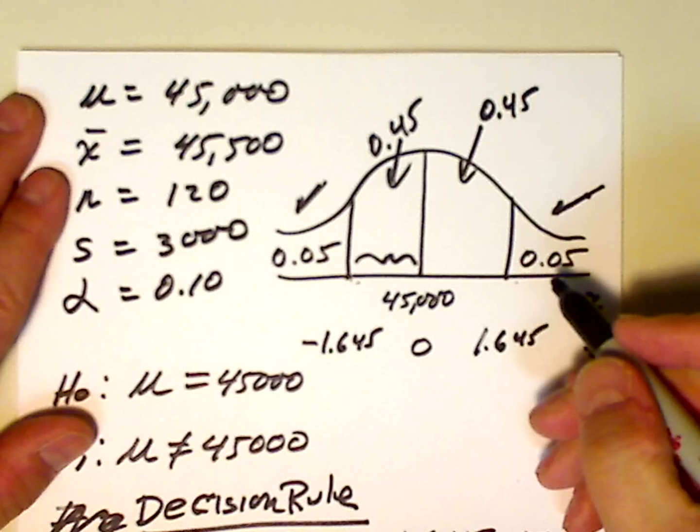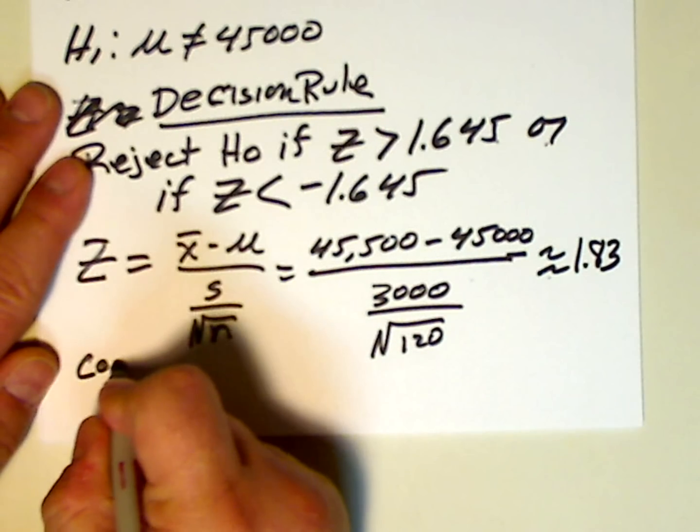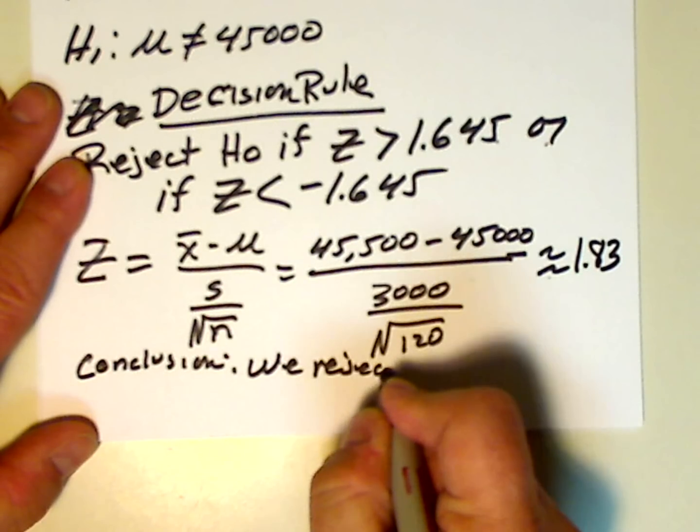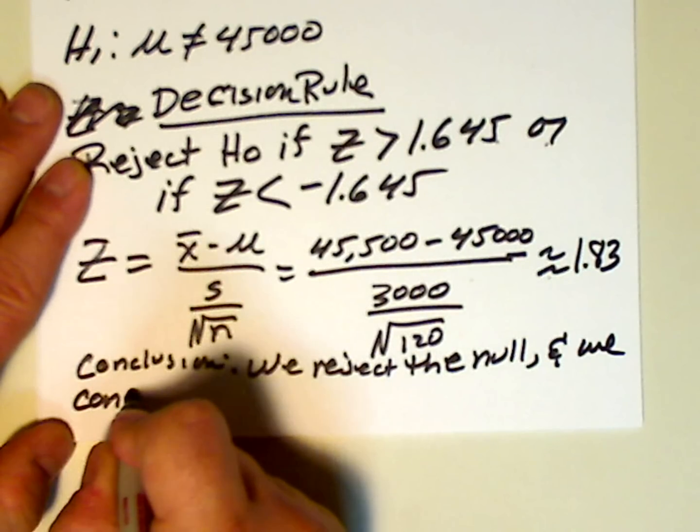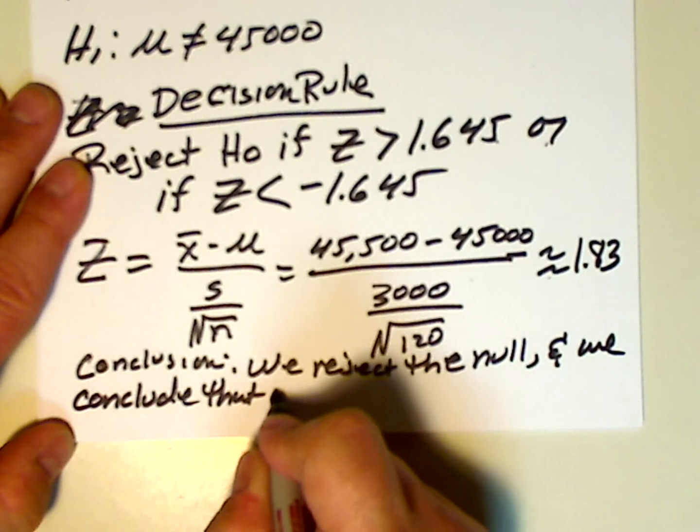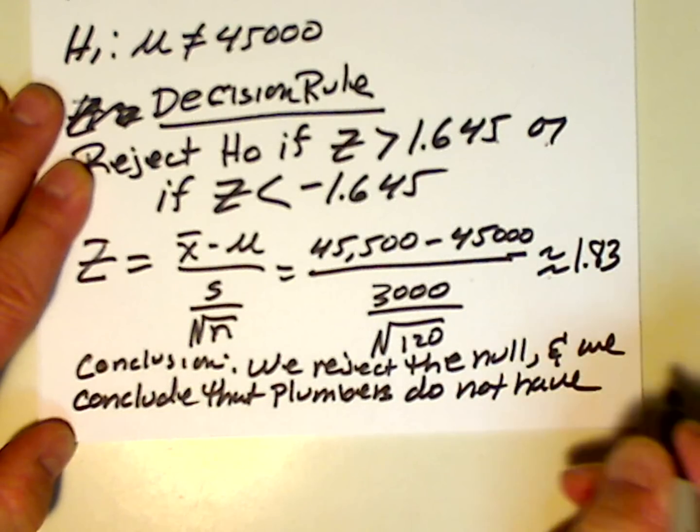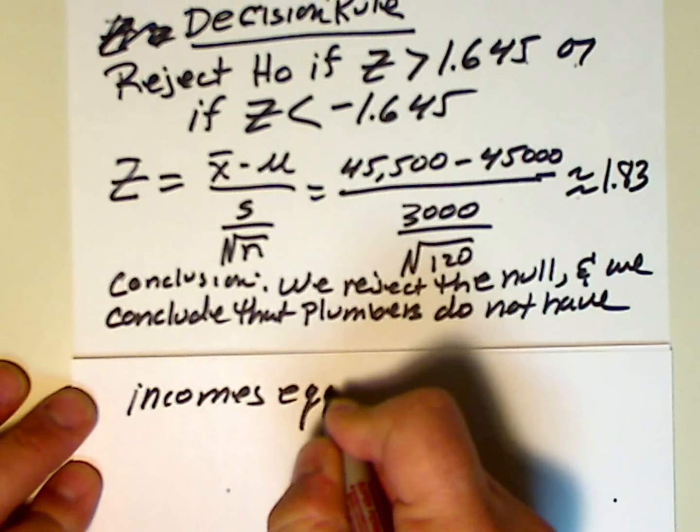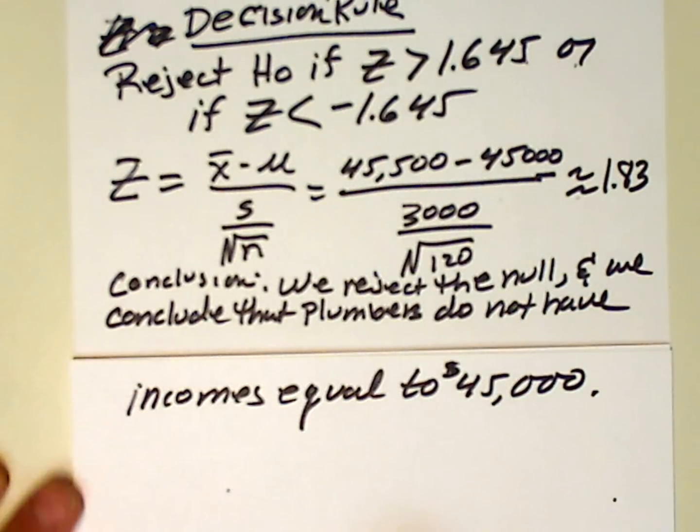So, 1.83 is greater than 1.645. So, our conclusion, let's go down here. Our conclusion is we reject the null, and we conclude that plumbers do not have incomes equal to $45,000. That's our conclusion.